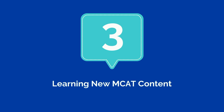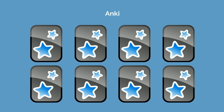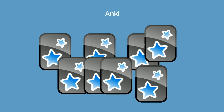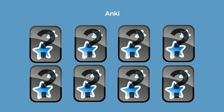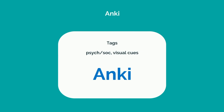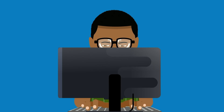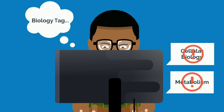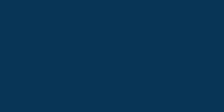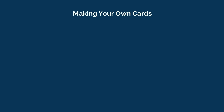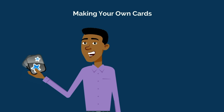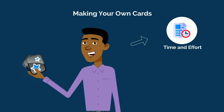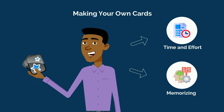Third, let's talk about learning new MCAT content. With Anki, you are presented a series of flashcards in a random order. If you are using a pre-made deck, this presents as a significant issue as it's not easy to memorize information if your content review and flashcards are out of sync. Tags can help, but it's far from a perfect solution. You may find yourself reviewing the biology tag, but looking at cellular bio or metabolism when you wanted to reinforce molecular biology instead. You can get around this by making your own cards, but the added time and effort spent creating cards could be better spent memorizing.